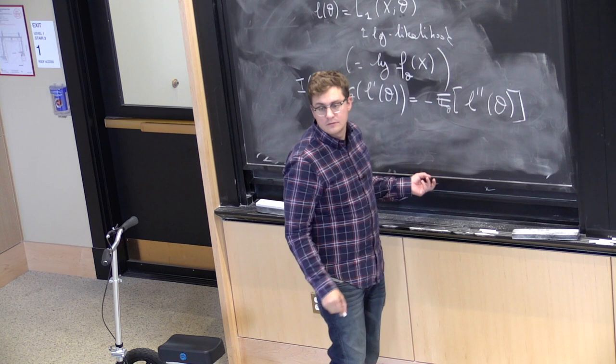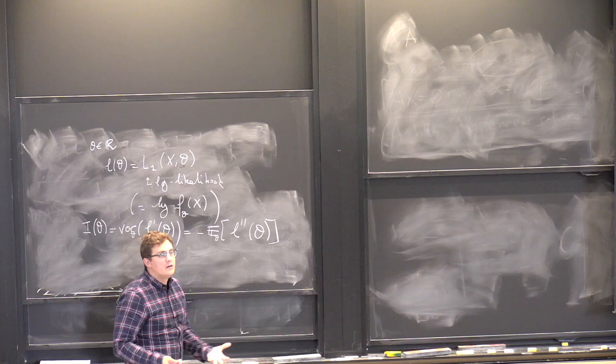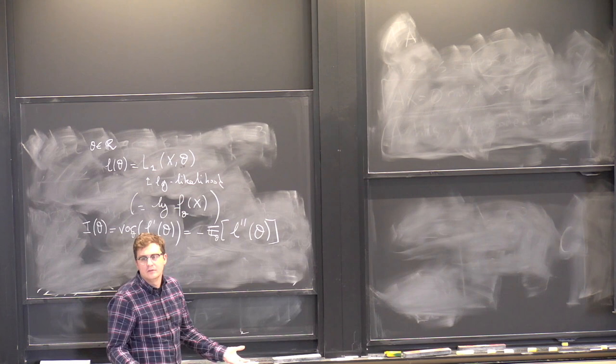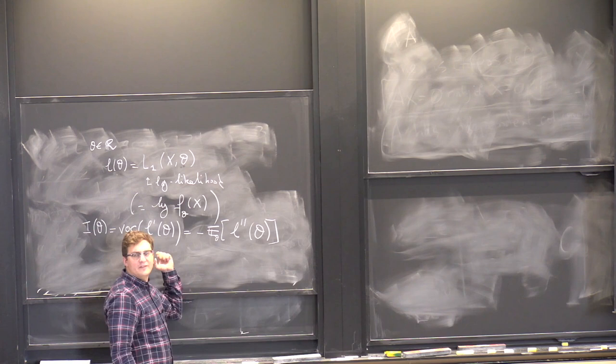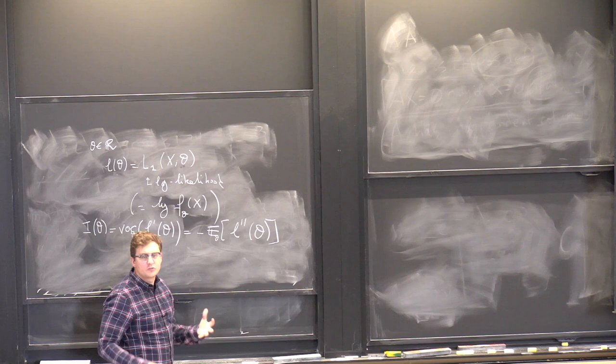Typically, the theta we're interested in is the true parameter theta star. But view this as a function of theta right now. The statement that the variance of the derivative equals negative the expectation of the second derivative is not trivial — it comes from the fact that this is a log of a density.